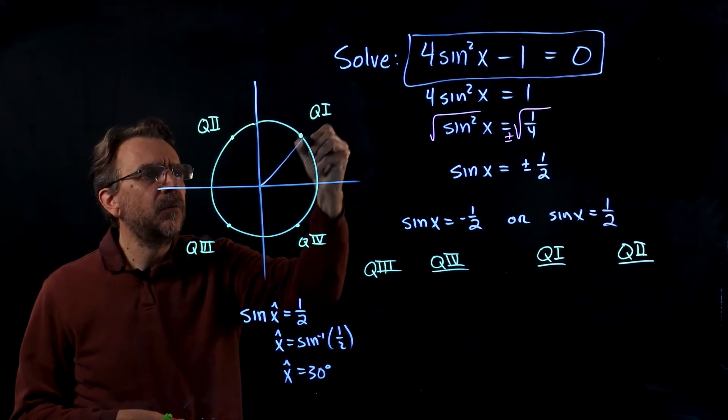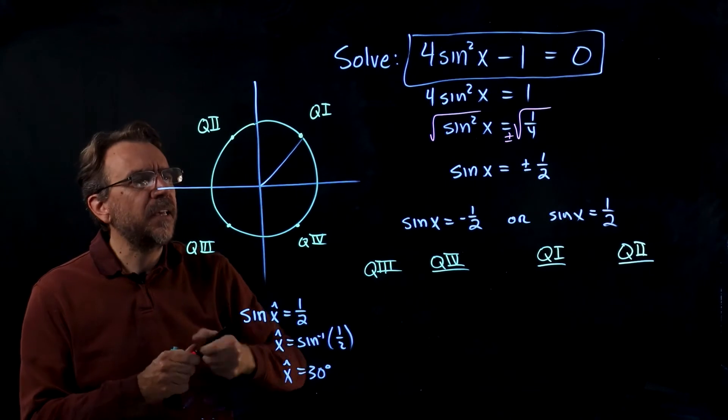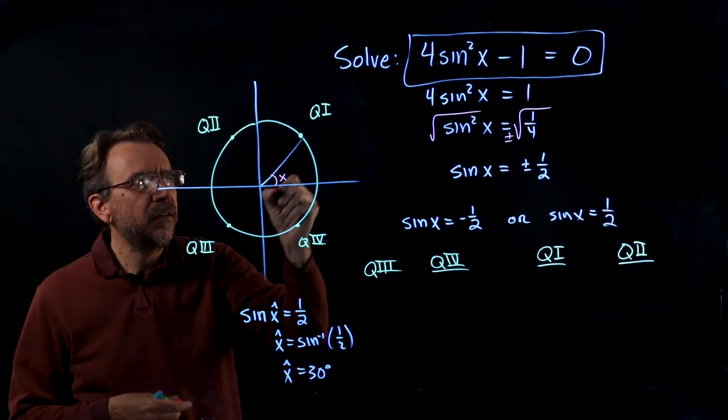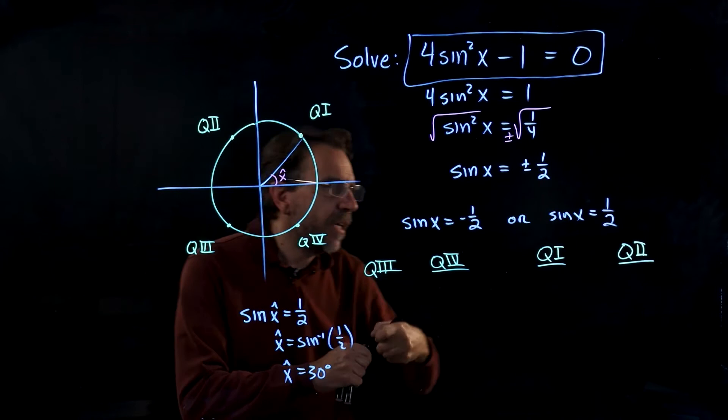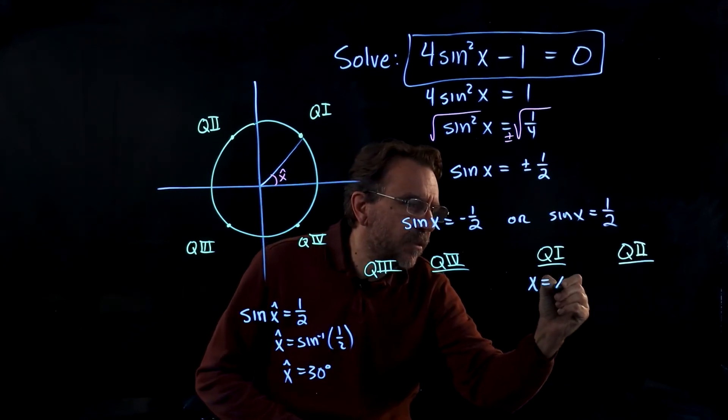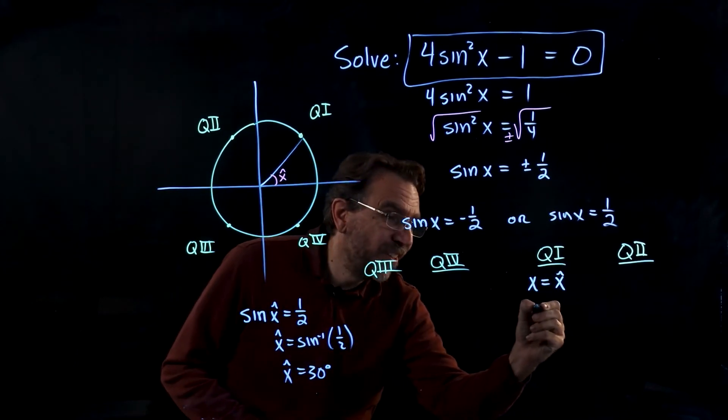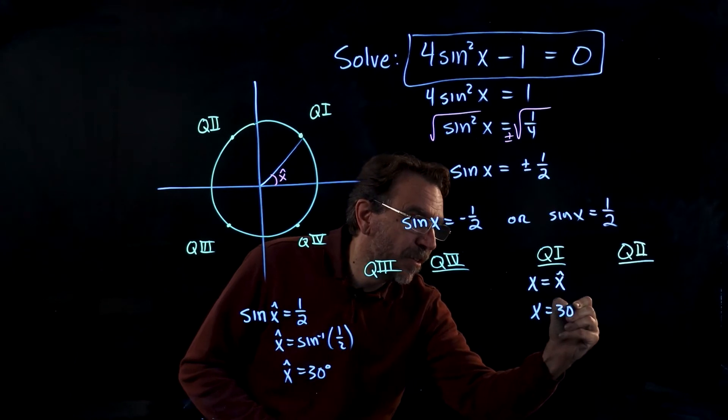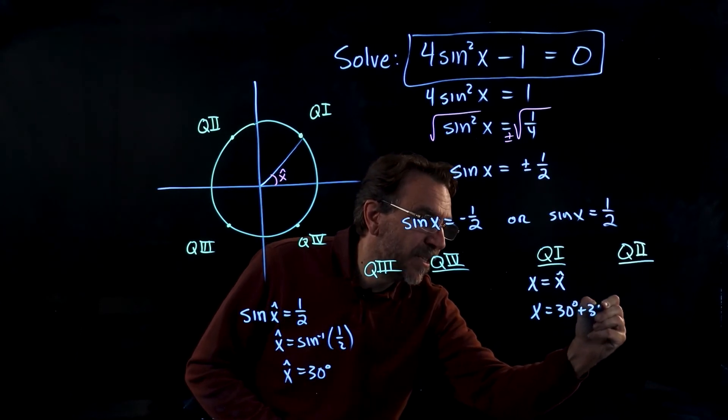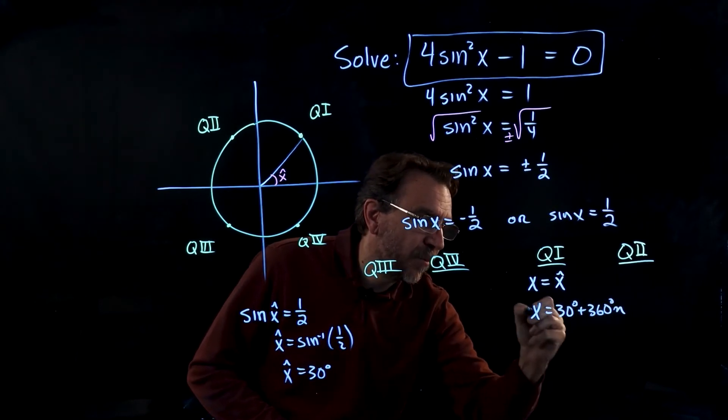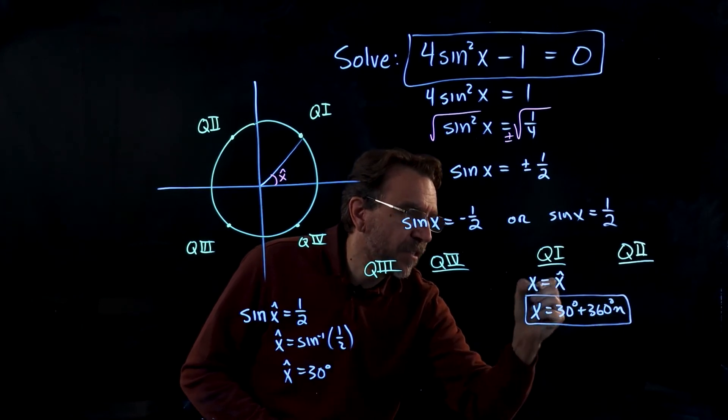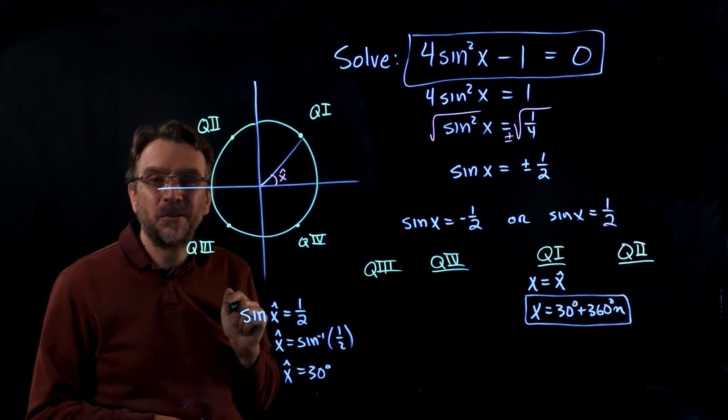Now in q1, the reference angle is the angle that we're after. So in q1, x equals x hat. So in this case, we have x equals 30 degrees. And then I'm just going to go ahead and tack on 360n while I'm here. Infinitely many solutions, co-terminal in quadrant 1.